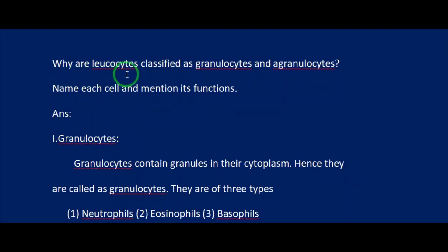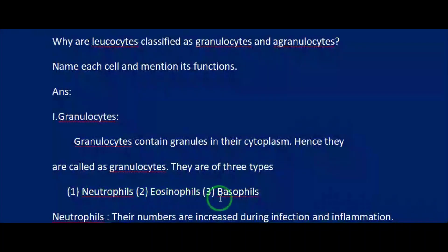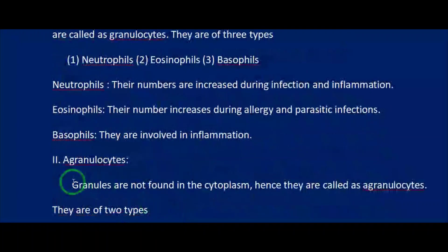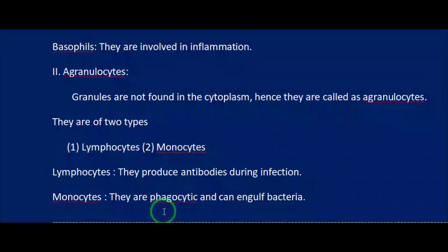Evaluation: Why are leukocytes classified as granulocytes and agranulocytes? Name each cell and mention its functions. Answer — Granulocytes contain granules in their cytoplasm, hence they are called granulocytes. They are of three types: neutrophils (numbers increased during infection and inflammation), eosinophils (number increases during allergy and parasitic infections), and basophils (involved in inflammation). Agranulocytes do not have granules in their cytoplasm. They are of two types: lymphocytes (produce antibodies during infection) and monocytes (phagocytic, can engulf bacteria). Write this answer in your notebook and learn it.